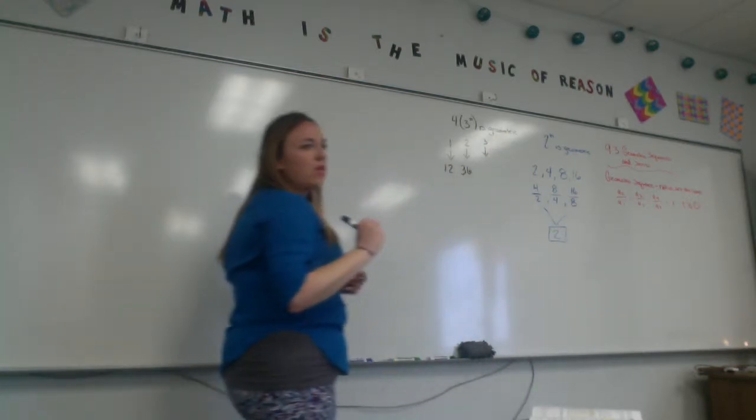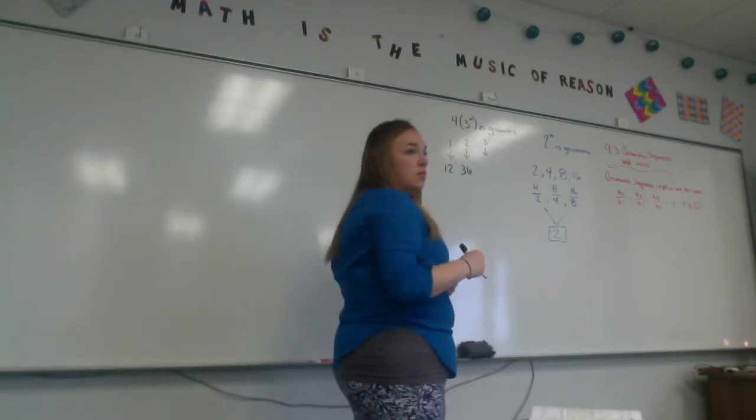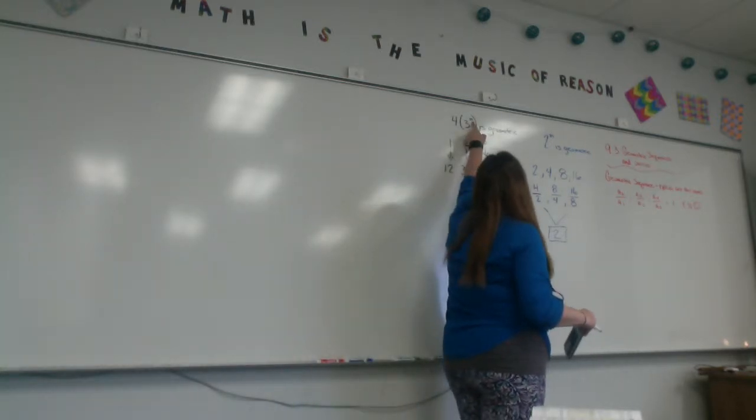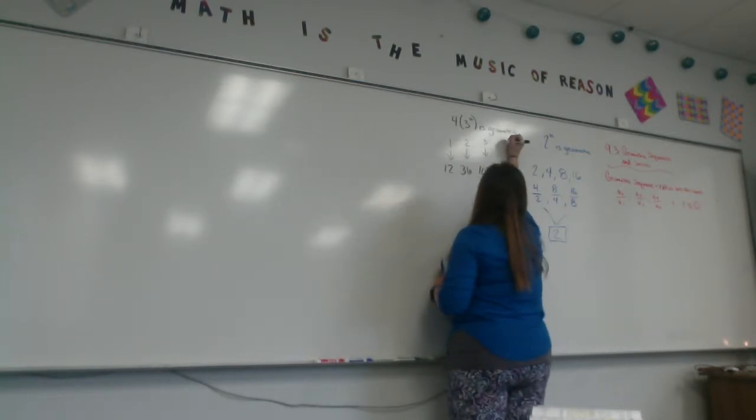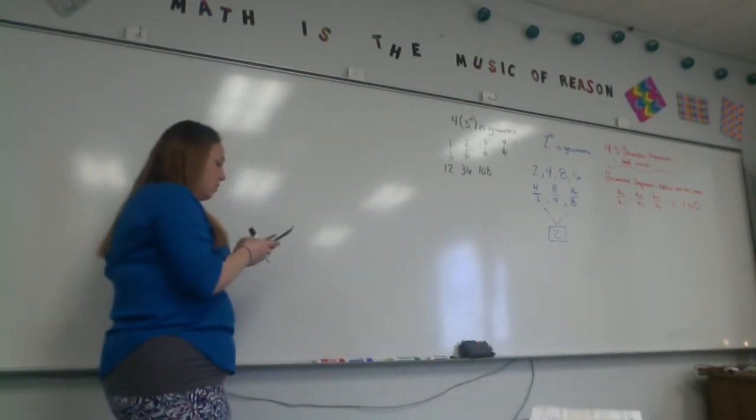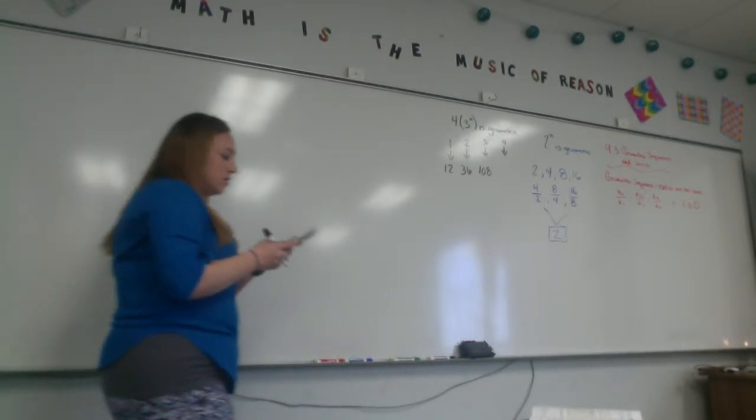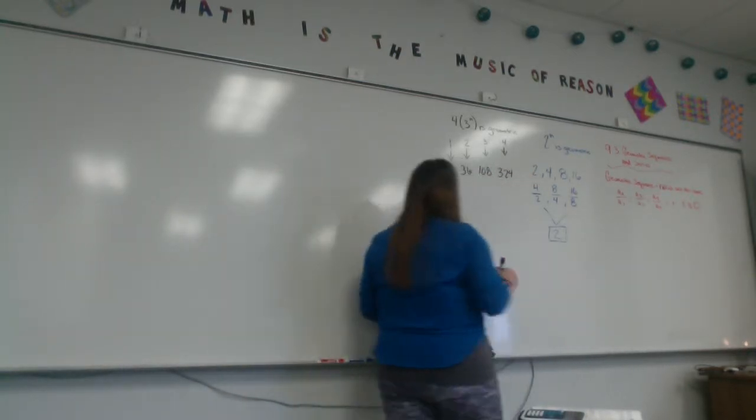3 to the 4th is 81. 81 times 4 is 324. Now, we can figure out what our geometric series is, what our sequence is by doing what? What do I need to do to figure out my geometric series now?